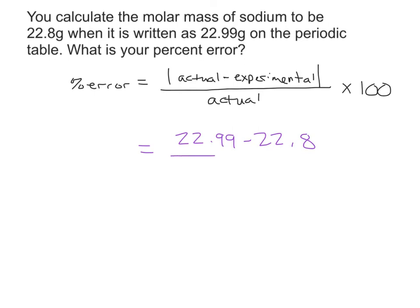We're going to divide that value by our actual. So this is the actual amount we should get if we use a periodic table. We're going to multiply that by 100. I'm going to simplify this first because I want to explain when we're doing percent error what this numerator actually means. When we subtract, our numerator becomes 0.19.